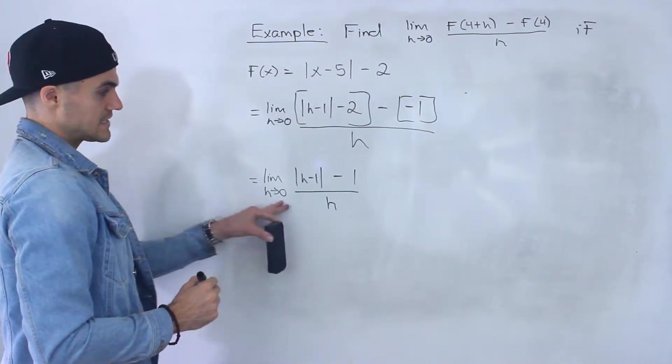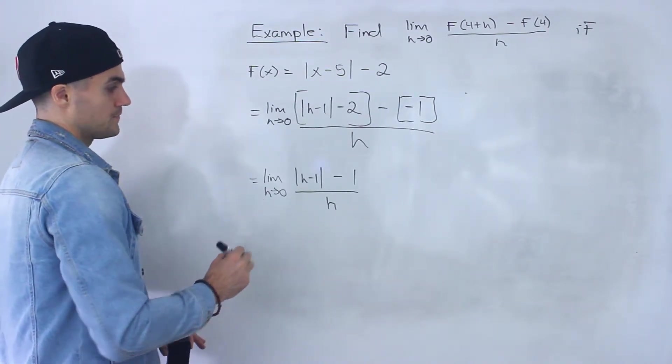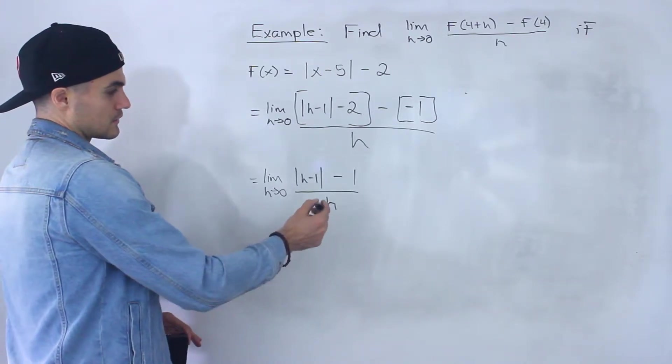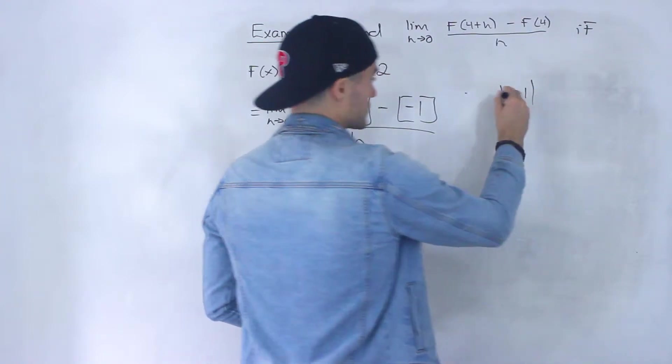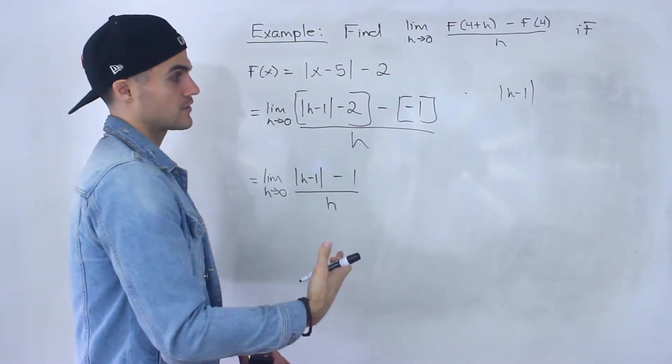So with this here, first off, what we want to do with this absolute value of (h-1) is convert it to a piecewise function.